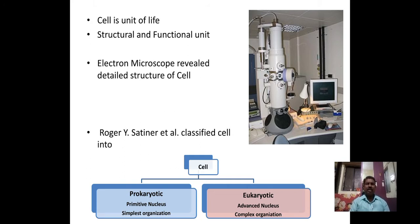On the other hand, the eukaryotic cell shows an advanced nucleus, meaning the nucleus has a nuclear membrane, nucleoplasm, nucleolus, chromosomes, and nuclear pore complex. Such a nucleus is called an advanced nucleus, and the cell organization is of a complex type.